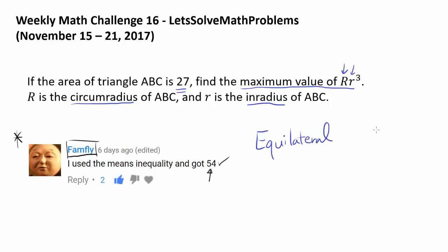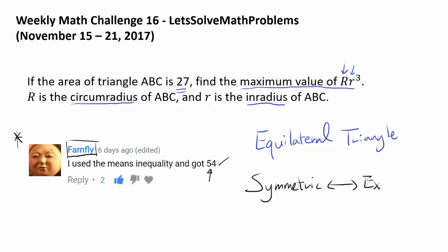You may ask why. In mathematics, one of the more prevalent ideas is that maximums or minimums occur when things are symmetric. Extrema almost always — not every single time, but almost always — go together with symmetry. Whenever you're trying to find a maximum or minimum, it's advisable to look at a square, equilateral triangle, or things with as much symmetry as possible. In this question, the equilateral triangle is actually the solution.